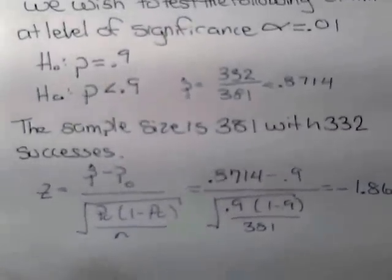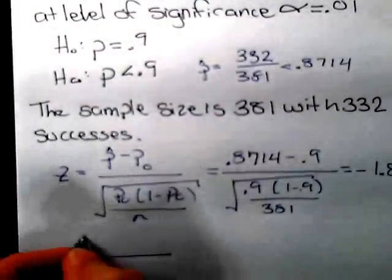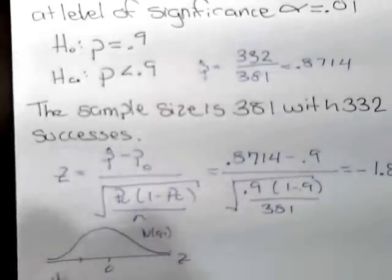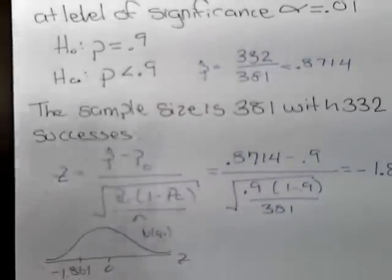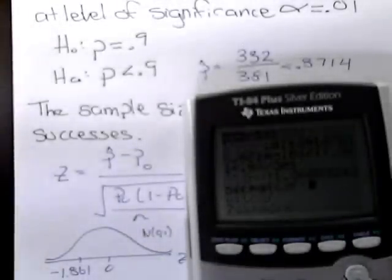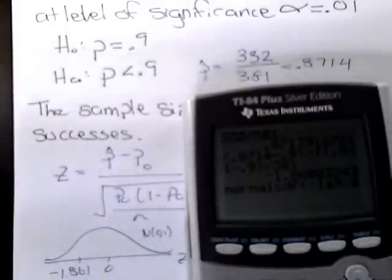We need to find this p-value. This can be done several ways. I'll go ahead and use the calculator. I know that this is a standard normal. We're at negative 1.861. Normal CDF going from negative infinity to negative 1.861.